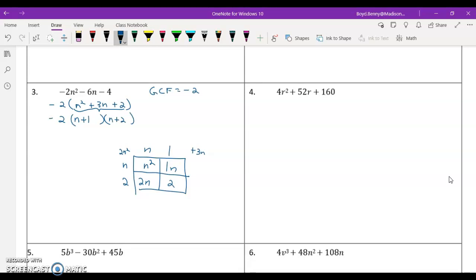Number 4. I'm not sure if 4 goes into 52. I know it goes into 160. I do know 2 goes into all these, so let's just start with 2. If I factor out a 2, that would leave me with 2r squared plus 26r plus 80. Now I see that I can factor out a 2 again, and that would leave me with r squared plus 13r plus 40. Let's go ahead and put that back together. 4 actually does go into 52 thirteen times.